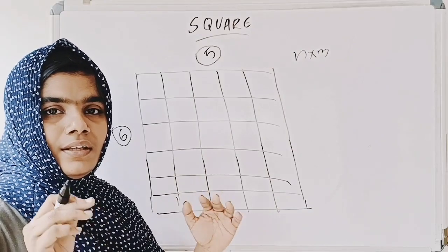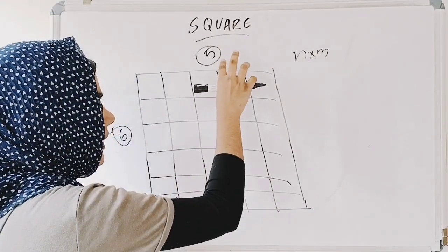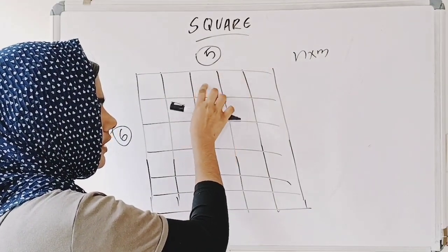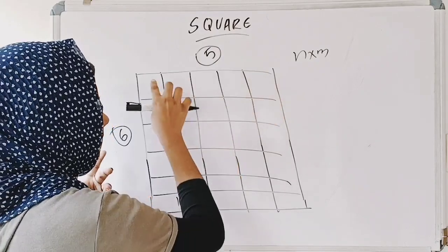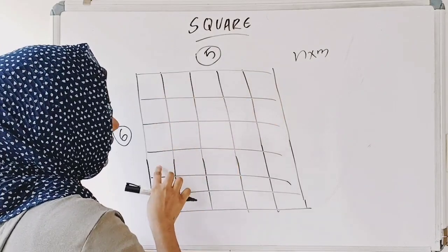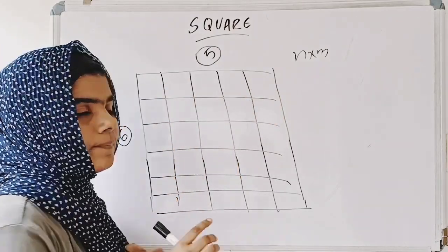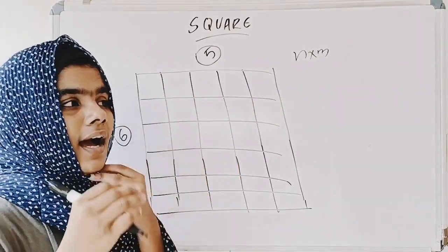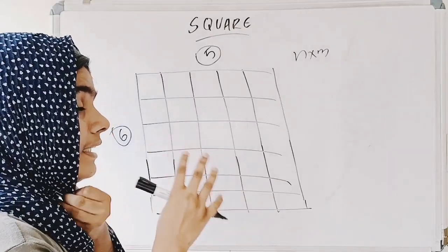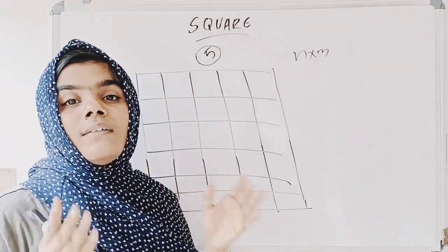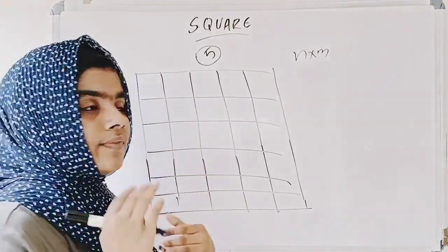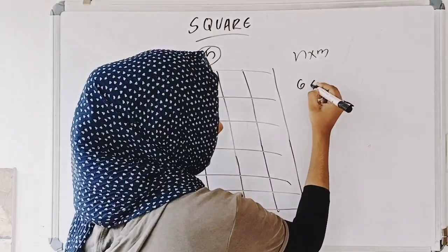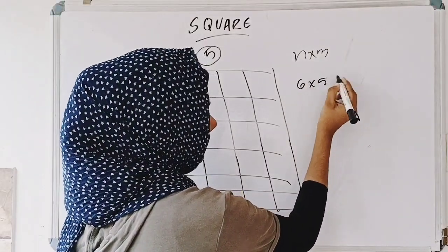If you need the count, then 5 is here: 1, 2, 3, 4, 5. And 6 is here: 1, 2, 3, 4, 5, 6. Then n into m. How do you do this? 6 into 5.